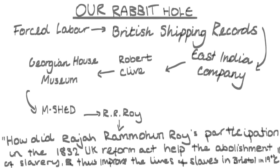This slide demonstrates our rabbit hole journey and how each stage led us to find our answerable research question, through the different lines of inquiry discovered each week via different methods of research. These lines of inquiry allowed us to understand Bristol as a place both past and present; however, we were consistently drawn back to week two, in which we learned about forced labour. Although we took different angles throughout our rabbit hole journey, the breadth of knowledge we gathered ultimately allowed us to find Raja and his history with Bristol. Despite the Georgian House Museum being closed and some archives being inaccessible, we were able to further our research with the history and context of Roy.